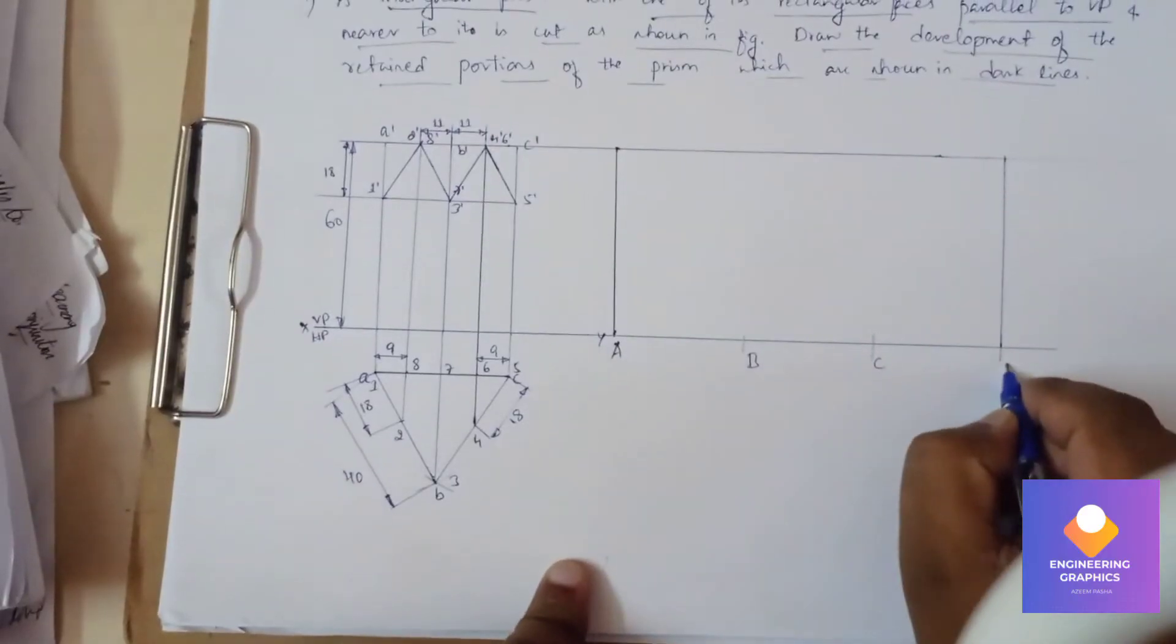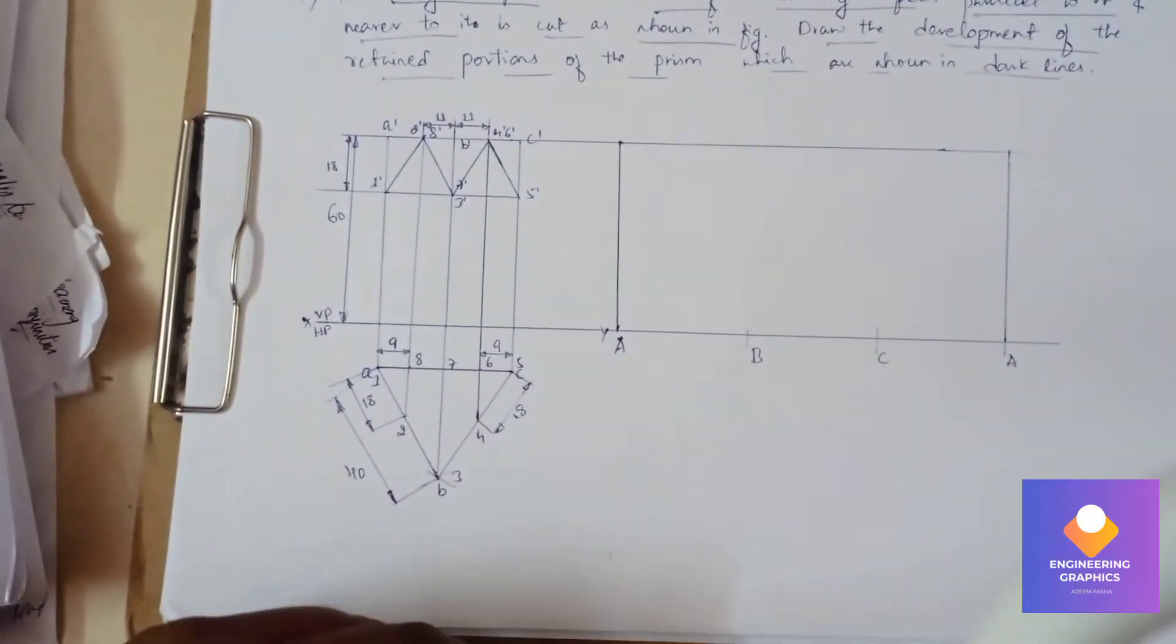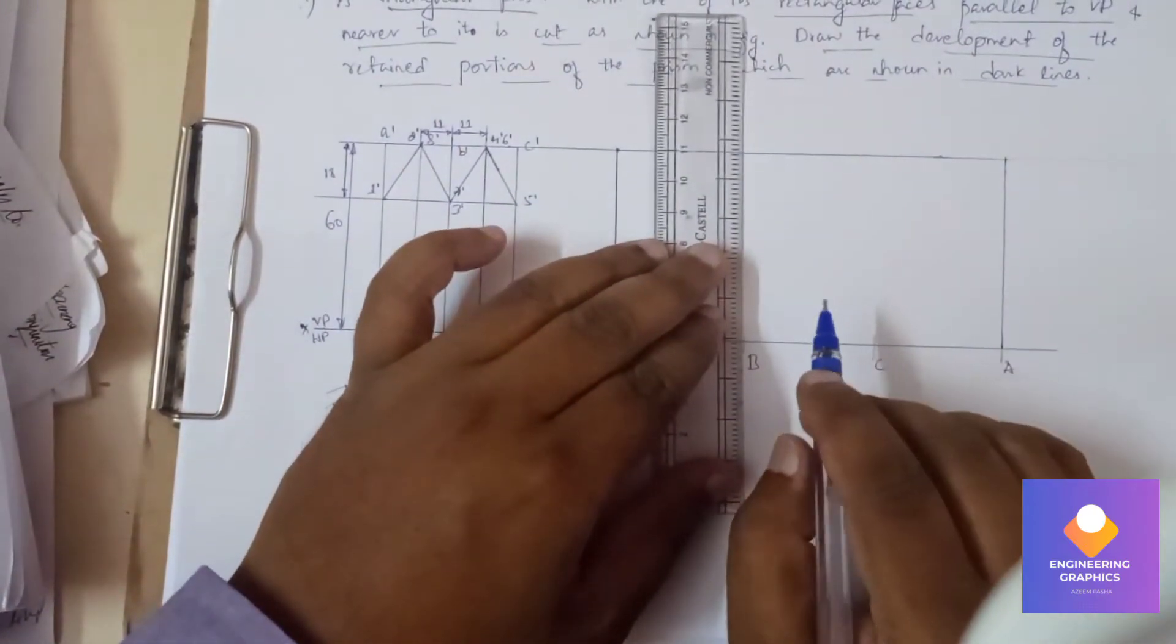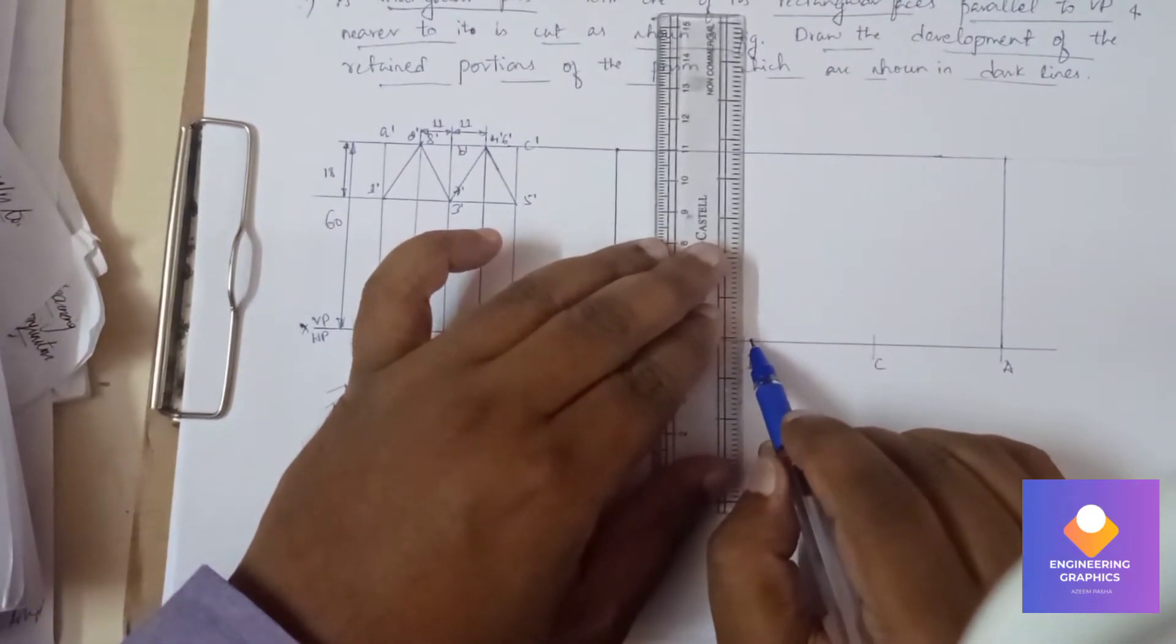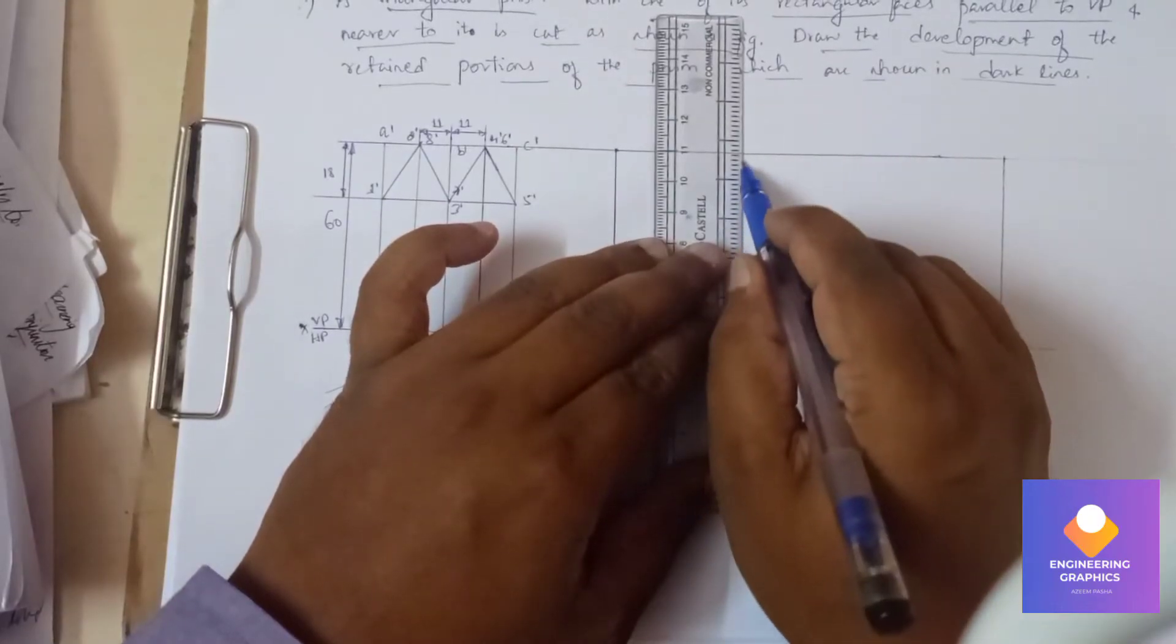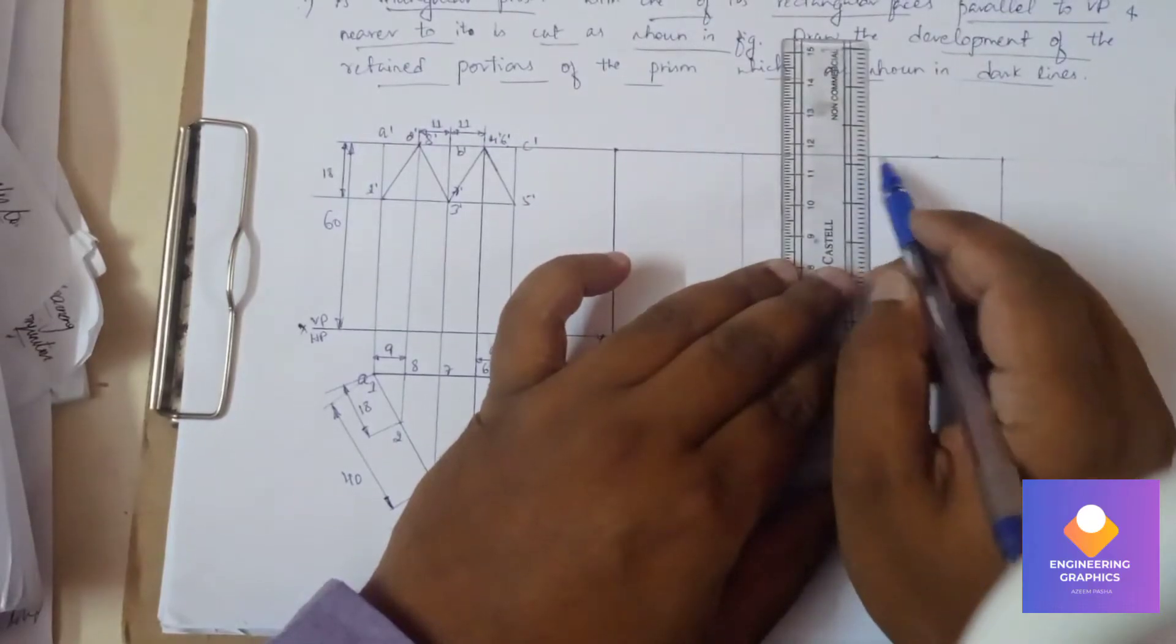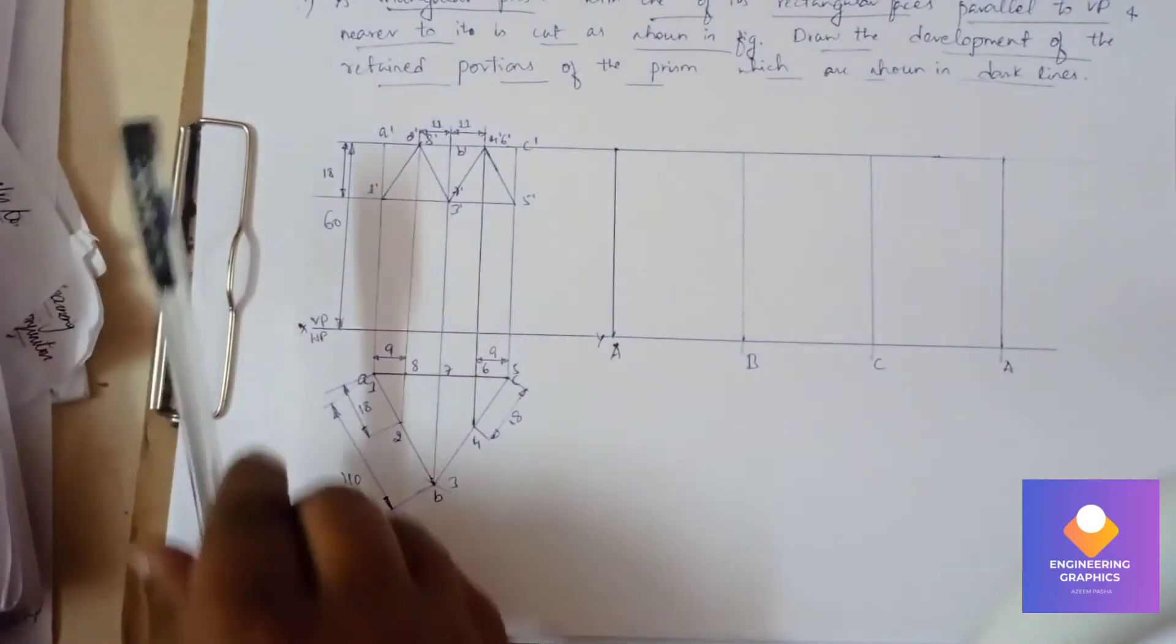So I can mention B, C, and D and A, okay. It is done with the parallel line method. Here it is a particular one.